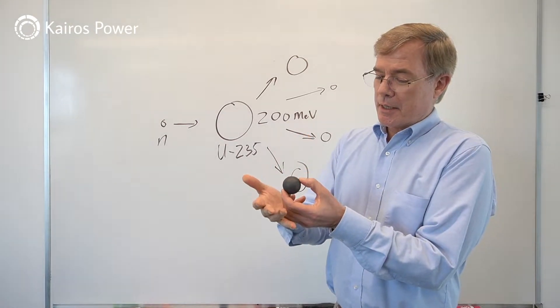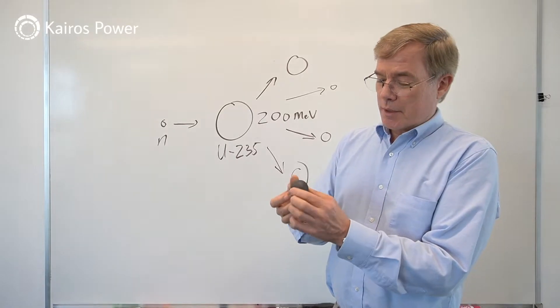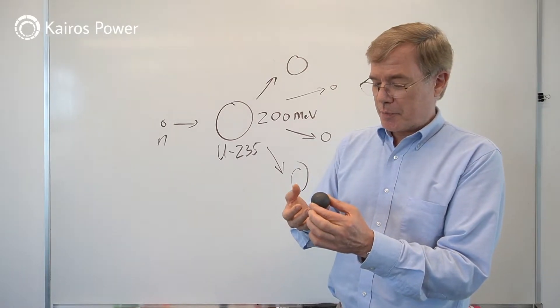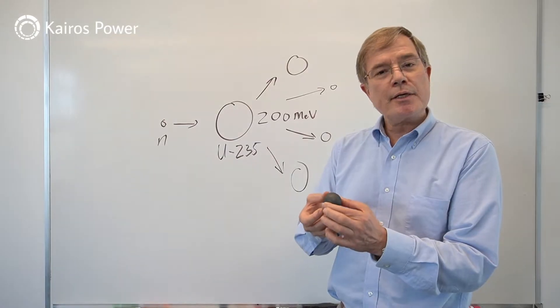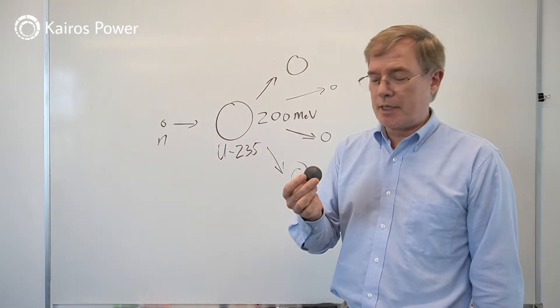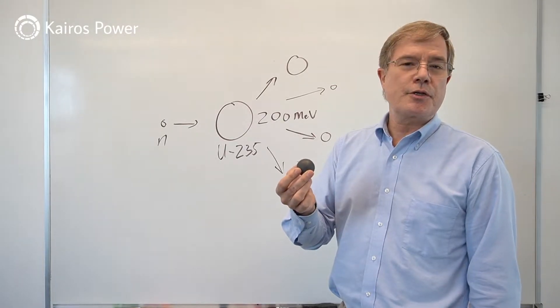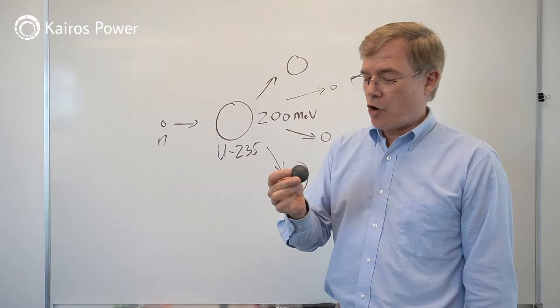Now, the other neat thing is that we're using a molten salt coolant called FLiBe. It's a mixture of lithium and beryllium fluoride. This coolant has tremendous properties because it's chemically stable, intrinsically low pressure, and we can deliver heat at very high temperature. So we can produce steam at conditions that rival the best-in-class fossil plants, but without any carbon emissions.